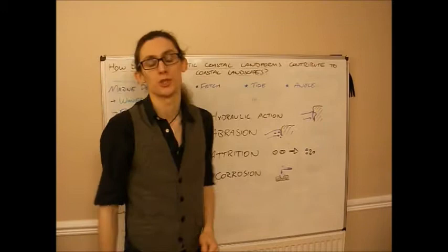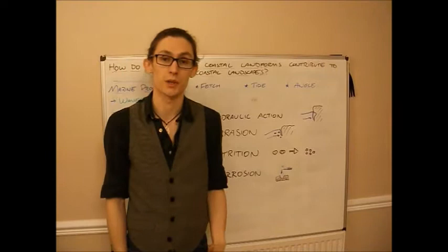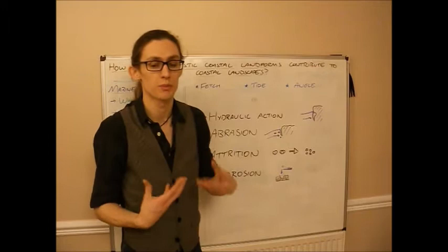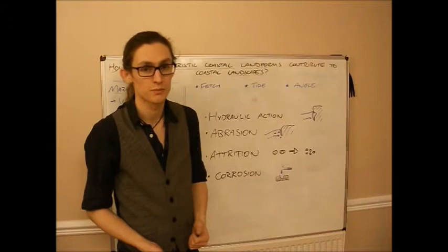Corrosion is a chemical process, and this occurs mostly with limestone and other calcium carbonate-based rocks. Chalk's another one. Because it's the acid, it's the CO2 mixing with the water. Carbon dioxide mixing with the water to create carbonic acid that erodes the rock.